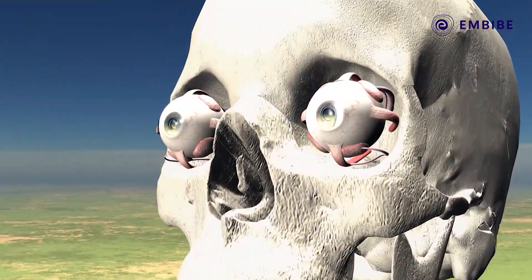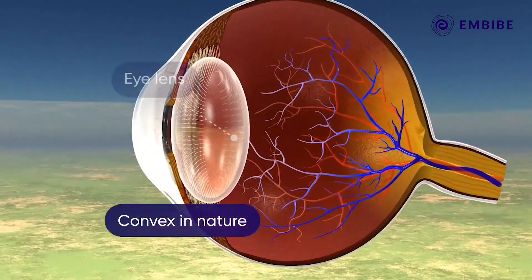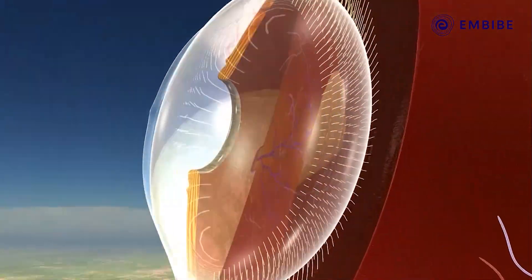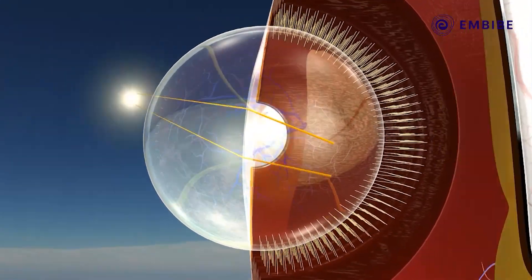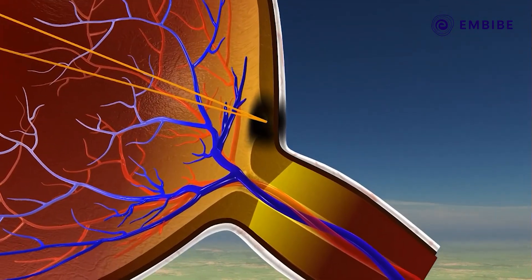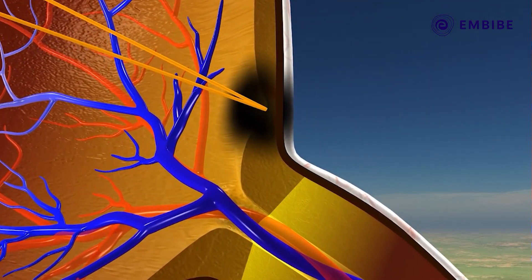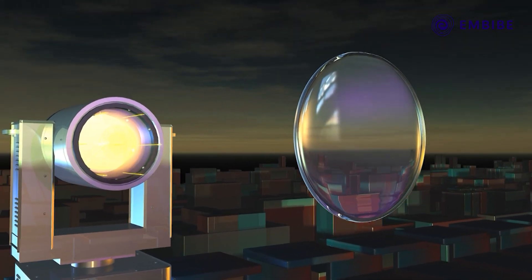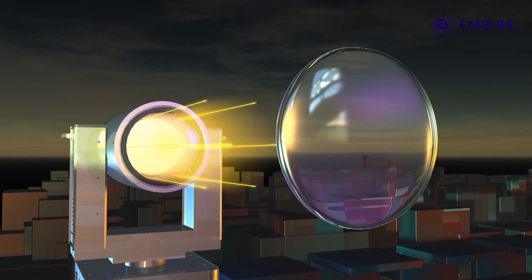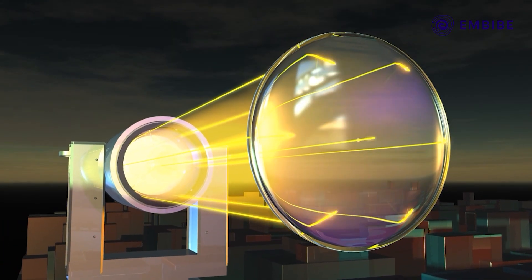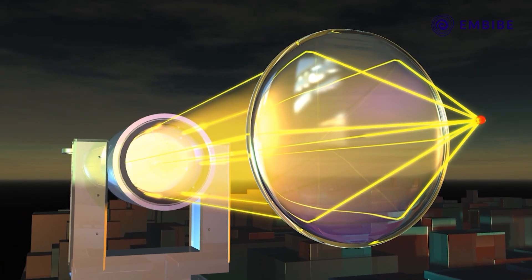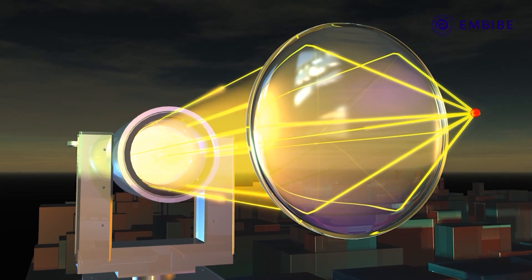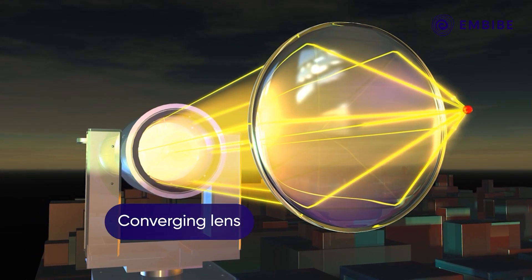The lens in a human eye is convex in nature. We should not look at the sun directly as it can damage our eyes permanently. Hence, we have understood that the rays of light incident on a convex lens get converged on the other side. So, it can also be called a converging lens.